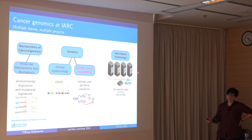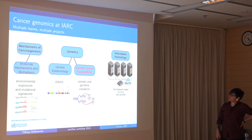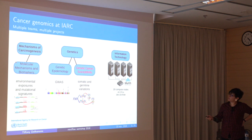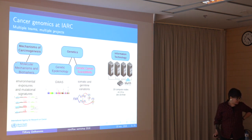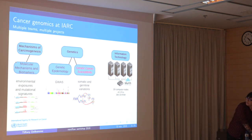Finally, there is one particular dedicated group, the information technology group, which helps people work on their computers. They also manage a cluster named OSIRIS, which is based on SLURM. It contains around 20 compute nodes, with 30 CPUs per node and around 400 GB RAM per node.